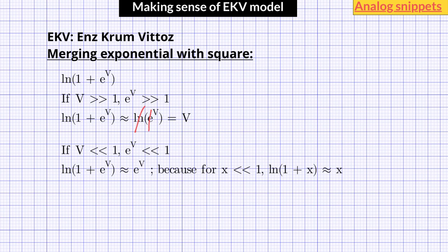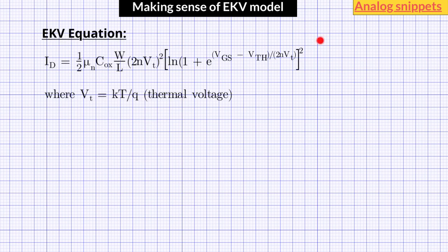Now let's look at the EKV equation and see how this all works. Here is one of the simpler EKV equations. Although this equation looks quite formidable, keep in mind that it intends to cover all three regions of MOS operation. The ln(1 + e^V) equation we were looking at earlier is over here. So basically, (VGS - VTH)/(2nVT) is our V, where n is the subthreshold gate coupling coefficient.